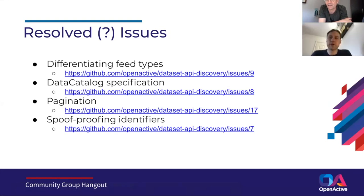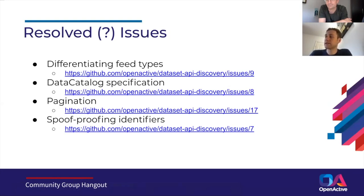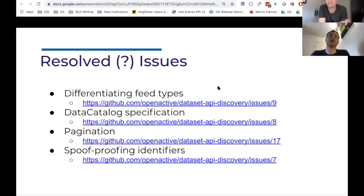Right now there are three places this information is stored: the identifier, the kind, and also an alternative type. So there's a bit of redundancy there. If you could bring up the issue that would be helpful.